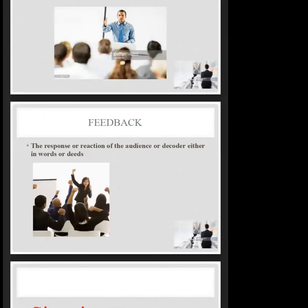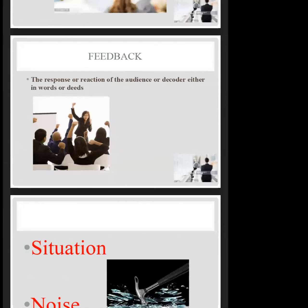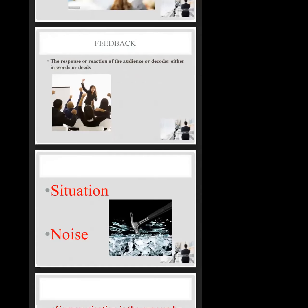That is also the next point: feedback. Feedback is the goal of communication. The feedback is the interpretation — the response or reaction of the audience or decoder, either in words or in deeds. As a dynamic communicator, you look out for feedback. You're observing their eyes, their body language, because you're looking for feedback. You want to be sure the feedback you're receiving aligns with what you're giving out. When feedback and code are in alignment, you are a good communicator. That is the challenge of communication — not your preparation but the delivery: making what you said and how they reacted align.